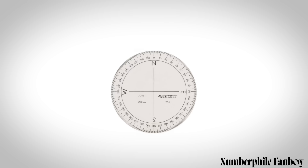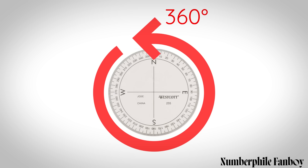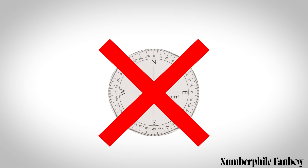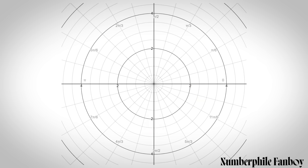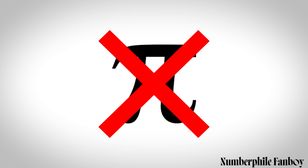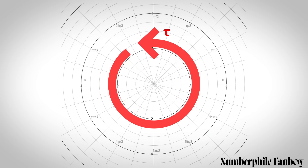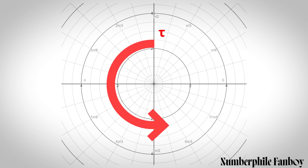Most people describe angles using degrees where a full turn is 360 degrees and a half turn is 180. But in pure math you generally describe angles in radians, where a full turn is 2 pi radians and a half turn is pi radians. Some people think we should use tau, which equals 2 pi, because then a full turn is 1 tau and a half turn is half tau.